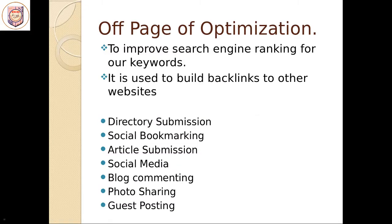Now we will go for off-page optimization. Off-page optimization is used to increase the search engine ranking for our keywords — basically it is used to build backlinks to other websites. You can start off-page optimization when on-page optimization is about 90 percent complete. The different techniques are: directory submission, social bookmarking, article submission, social media, blog commenting, photo sharing, and guest posting. Directory submission means we submit our website to different search engines so that whenever a query for that particular topic comes, our website is visible to that search engine.